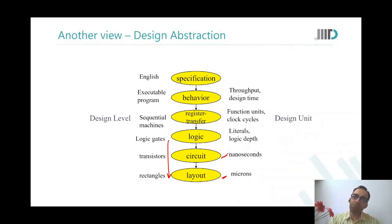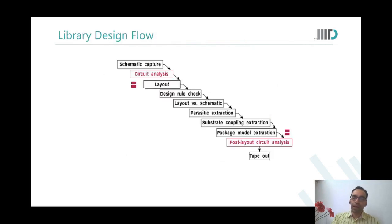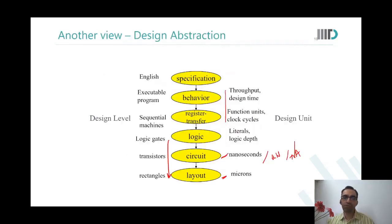So what are the units in which we talk of when we talk of any level of abstraction? When you are at the level of behavioral understanding or RTL, you talk in terms of throughput and number of clock cycles taken. When you go to logic, you talk of how many inputs, that is literals, and logic depth - how many number of stages. When you come to circuit, you measure its efficacy in terms of speed in nanoseconds, power in microwatts, leakage in microamperes or nanoamperes. And layout you measure in terms of area, in microns and micron square.